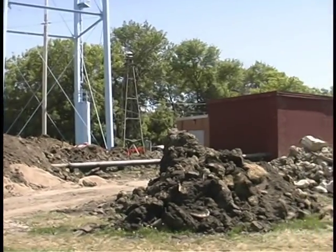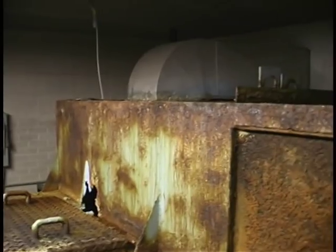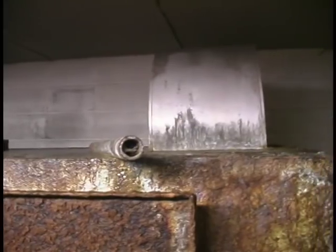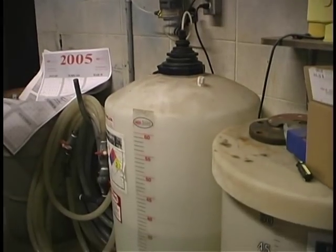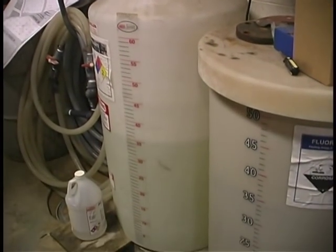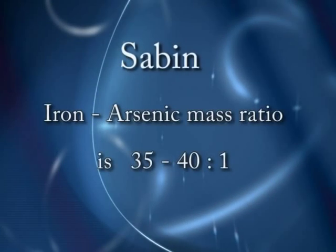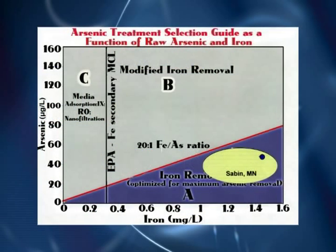The raw water arsenic concentration was below the old arsenic MCL but above the revised MCL of 10 micrograms per liter. The existing plant consisted of aeration to oxidize iron (though that part was not functional), gravity filtration through a sand filter, fluoridation, and chlorination. The raw water has sufficient iron to provide a 35-to-40-to-1 iron-to-arsenic ratio, placing the system in zone A and making it an ideal candidate to use the naturally occurring iron for arsenic removal.